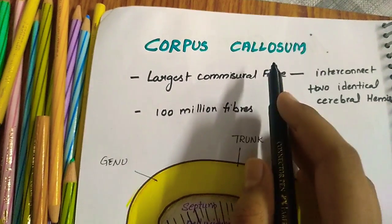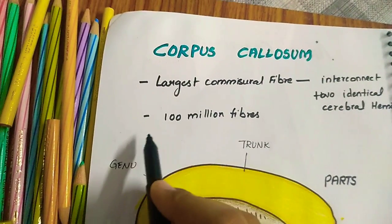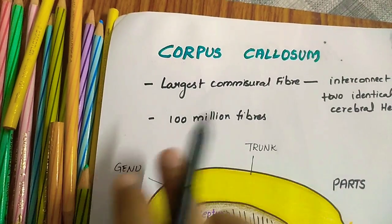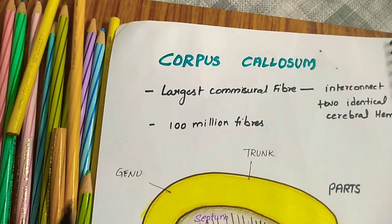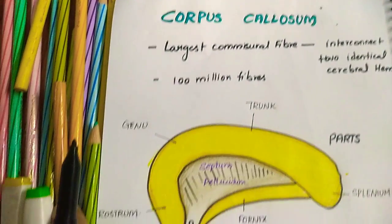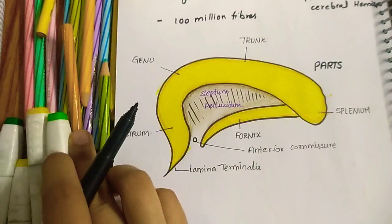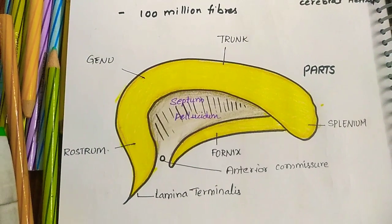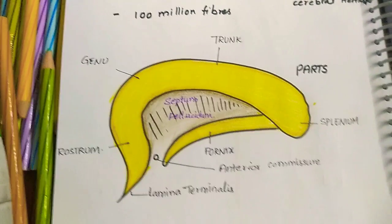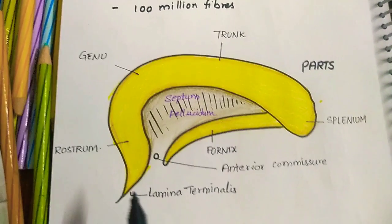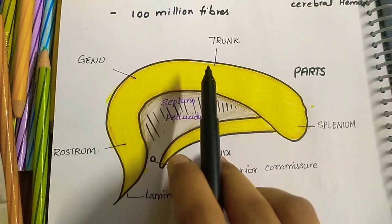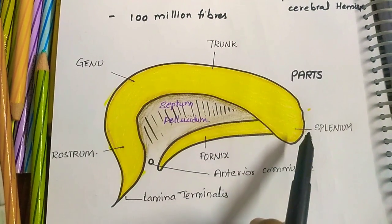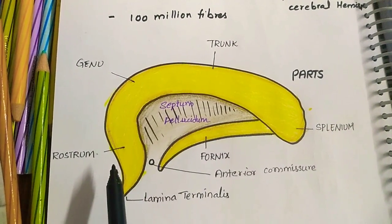The corpus callosum consists of about 100 million fibers connecting the two cerebral hemispheres. Coming to the parts of corpus callosum: the corpus callosum consists of a genu, trunk or a body, splenium, and a rostrum.